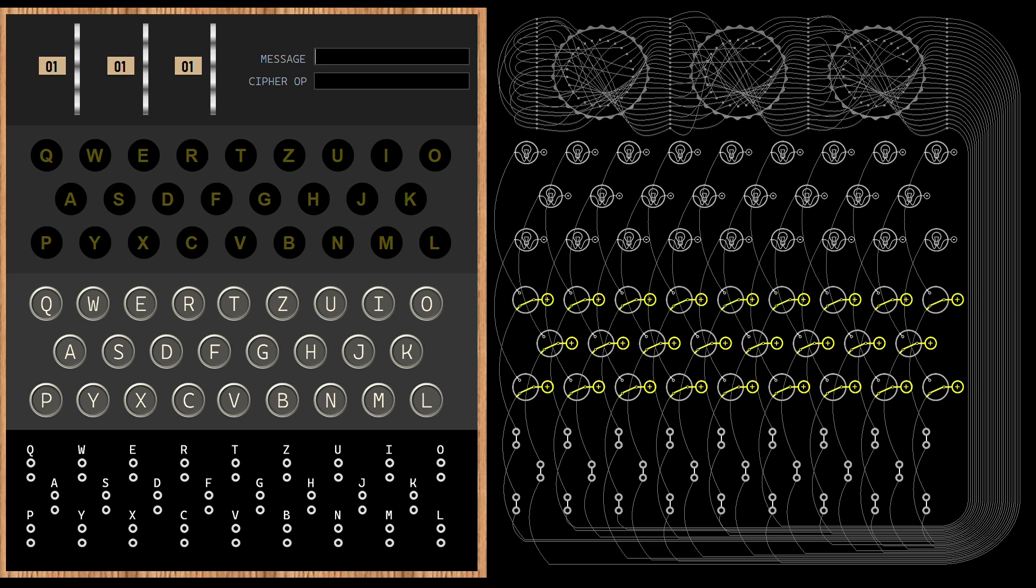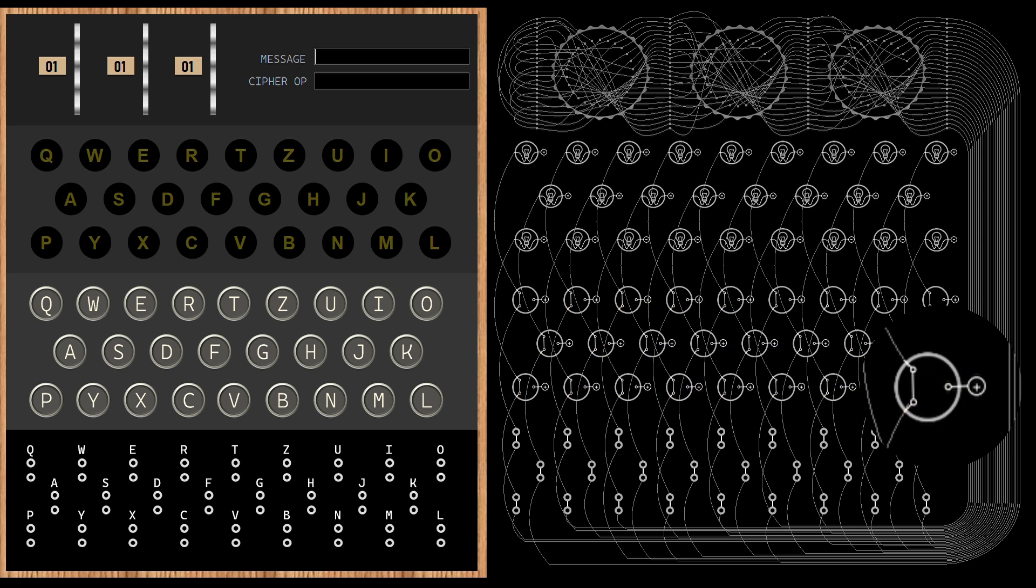The keyboard has 26 switches for each of the alphabet key on the keyboard. Notice that these are two-contact switches - these are not on-off switches which we encounter in daily life. When the key is pressed, the switch output wire connects to the battery's terminal. When the key is not pressed, the switch output wire connects to the light bulb.